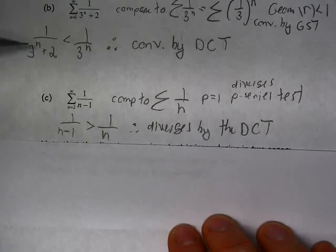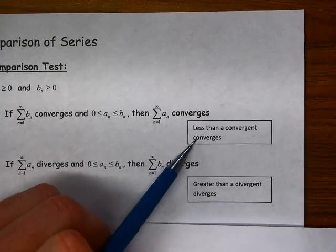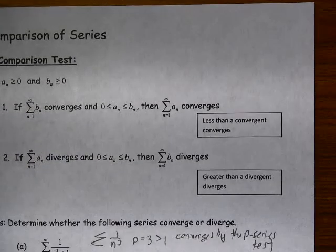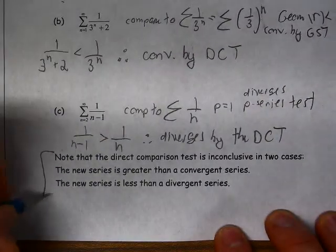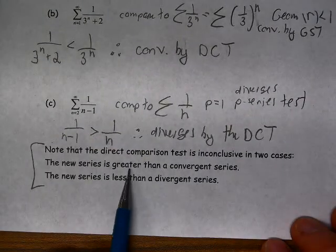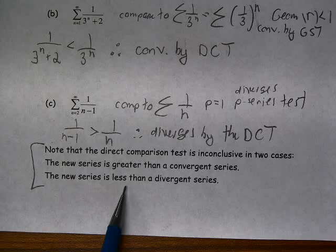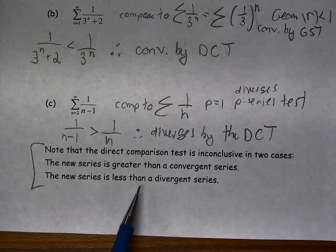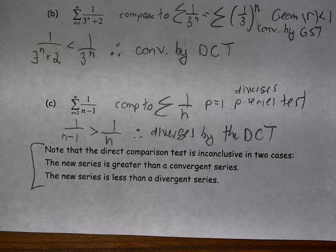Notice we have to have a very specific case: we need a series that is either less than a convergent series or greater than a divergent series — that's the only way we can use the Direct Comparison Test. The test is not conclusive if our series is greater than a convergent series, because our series might converge or it might not. And if our series is less than a divergent series, it might also be divergent or it might converge — we don't know. In either of those cases we need a new test, and for that we're going to use the Limit Comparison Test.